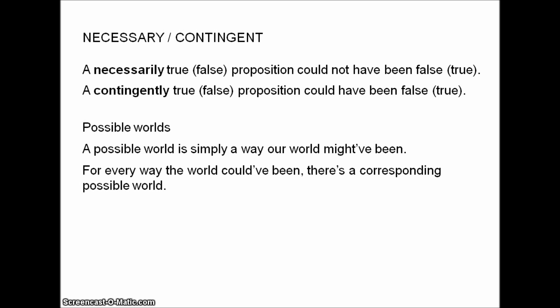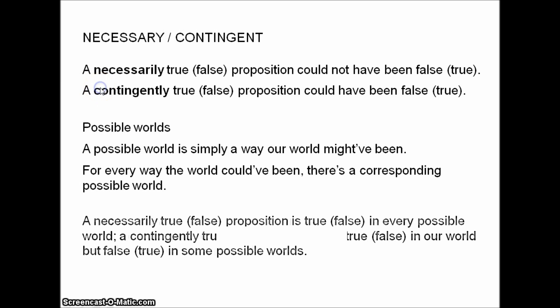There's no possible world in which Santa Claus both does and does not exist, since that would be contradictory, and hence impossible — that's not a way our world could have been. So we can use possible worlds to think about possibility: a necessarily true proposition is one that is true in every possible world, while a contingently true proposition is true in our world but false in some possible worlds.